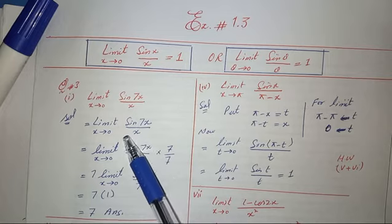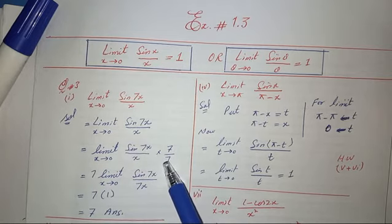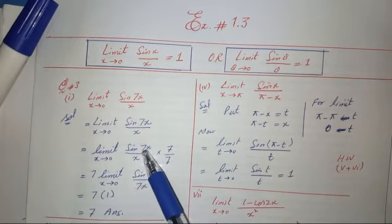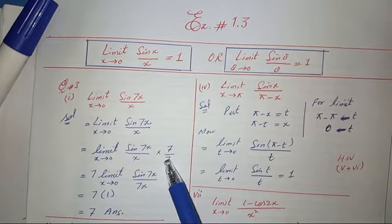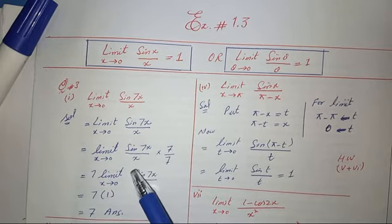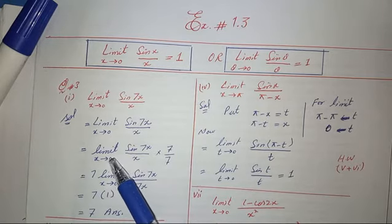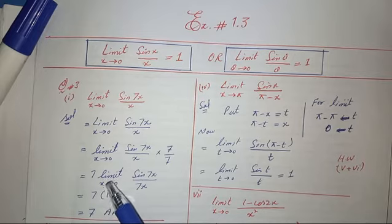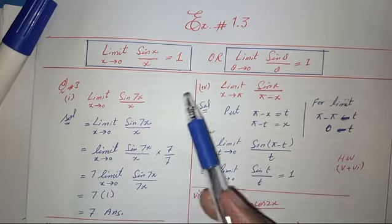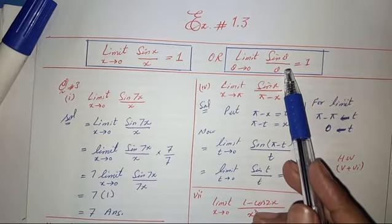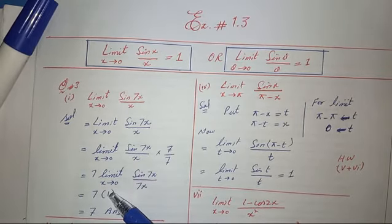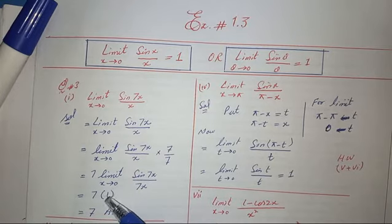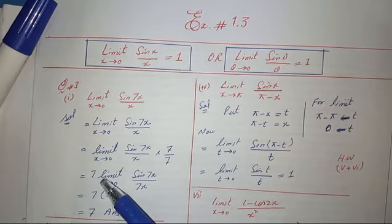We multiply and divide by 7: limit x tends to 0 of sine 7x multiplied by 7 over 7x. Since 7 is a constant, we take it outside the limit. This gives us 7 times limit x tends to 0 of sine 7x over 7x. You can see that sine 7x over 7x matches the sandwich theorem form, so this equals 7 times 1, giving the answer 7.